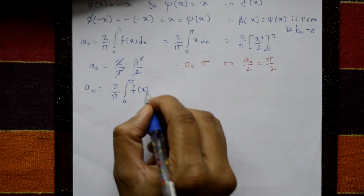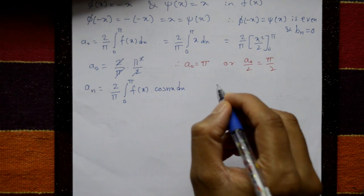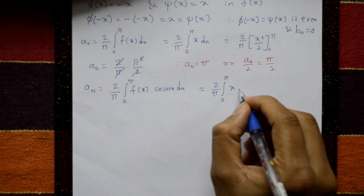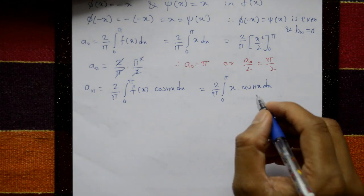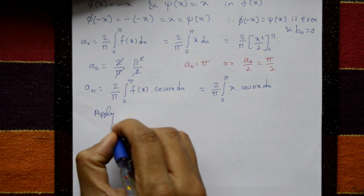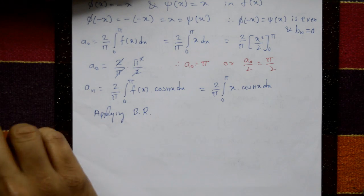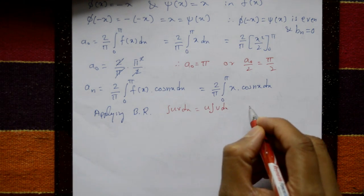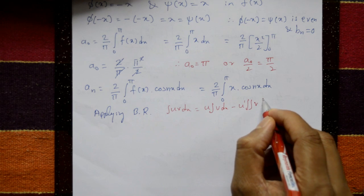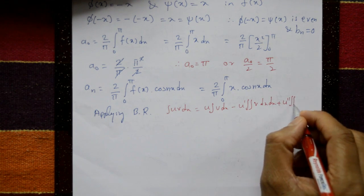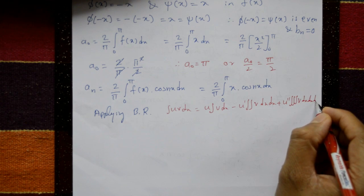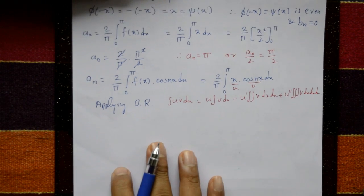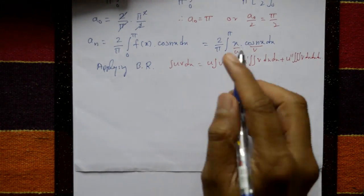Next, aₙ = (2/π) × integral from 0 to π of f(x) cos(nx) dx = (2/π) × integral from 0 to π of x cos(nx) dx. Applying Bernoulli's rule: u × ∫v dx − u' × ∫∫v dx + u'' × ∫∫∫v dx and so on, where u is the polynomial and v is the trigonometric function.